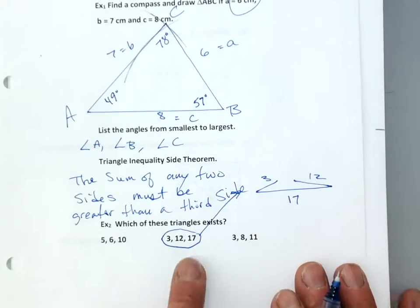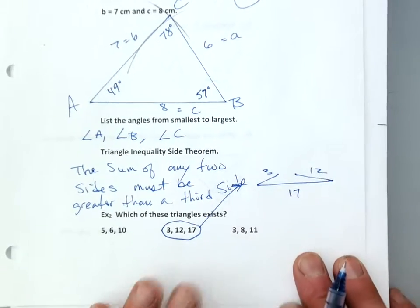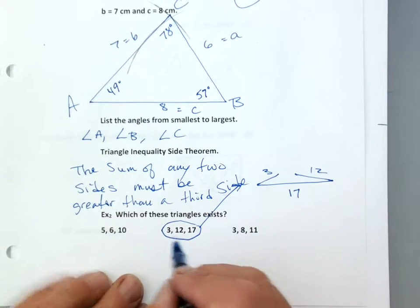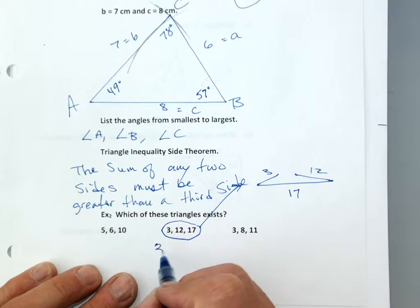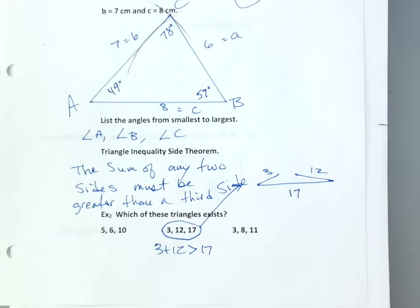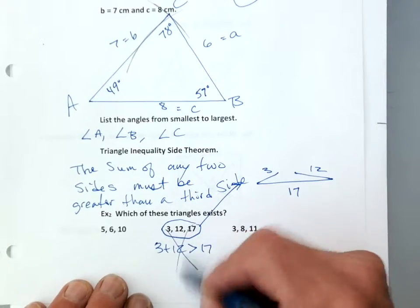So if I take a look at this second example, you can draw it but there's no way that's going to be a triangle. 3 plus 12 is not greater than 17 — that's 15, and 15 is not greater than 17. That doesn't work. No triangle exists.